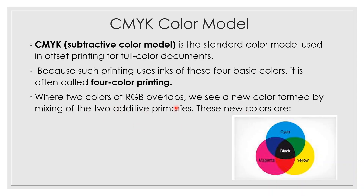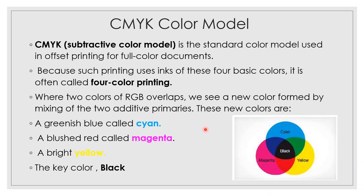Where two colors of RGB overlap, we see a new color formed by mixing the two additive primaries. These new colors are: greenish blue is called cyan, bluish red is magenta, and red plus green produces bright yellow. These are the same colors used in the CMYK model.